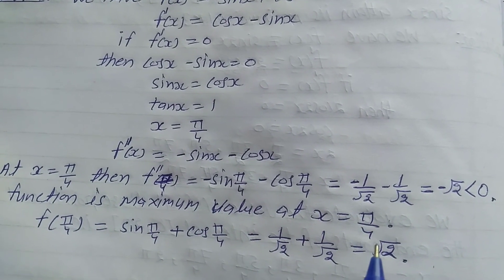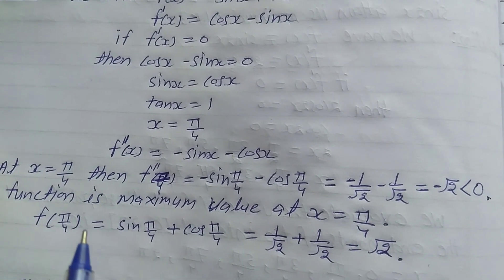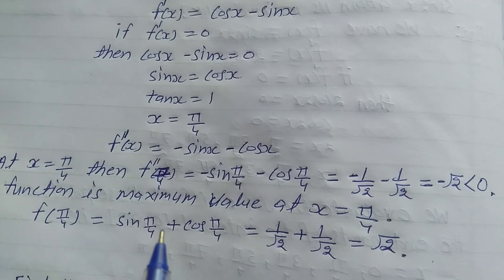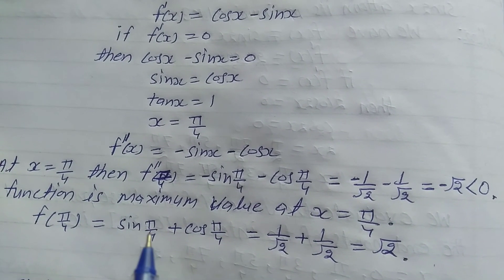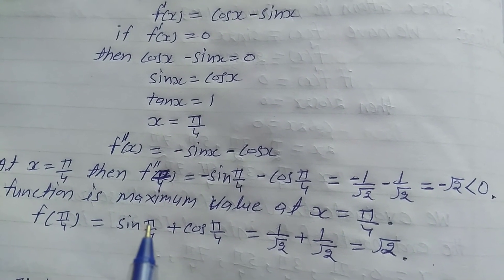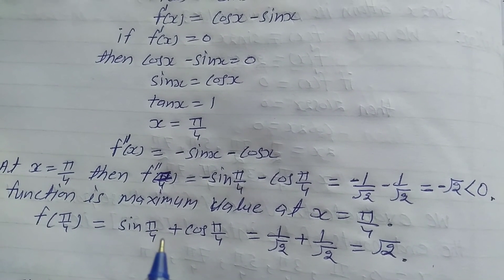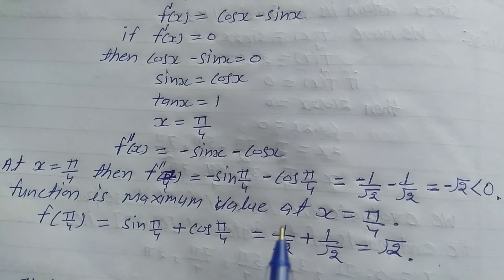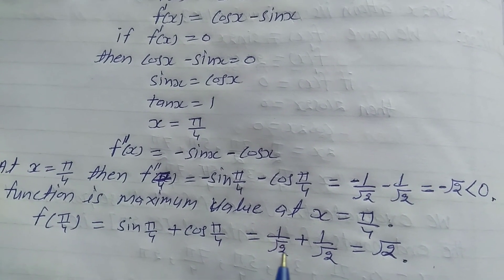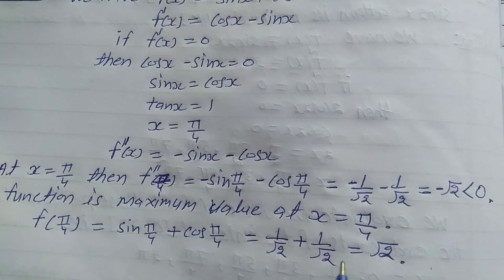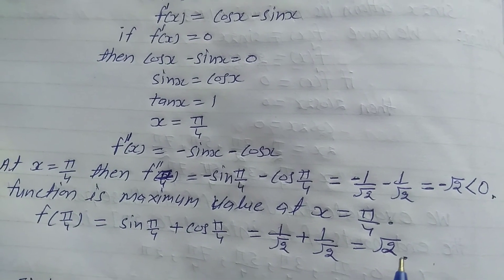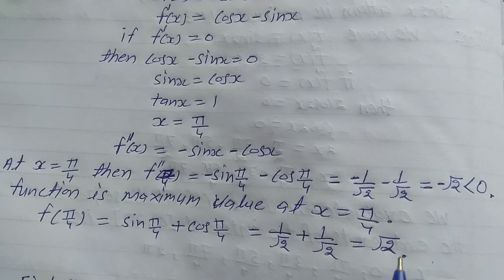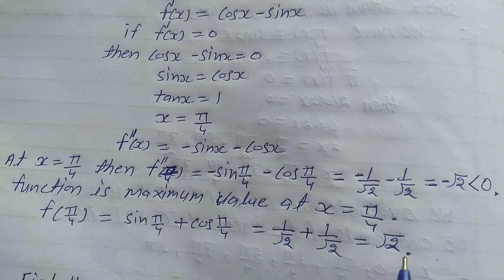So f(π/4) is equal to sin(π/4) plus cos(π/4). Substituting the values, sin(π/4) = 1/√2 and cos(π/4) = 1/√2, so f(π/4) equals 1/√2 plus 1/√2, which equals √2. That is the maximum value of the function.